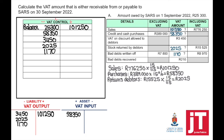Bad debts recovered — they provided the figure, so there's no calculation involved. Bad debts recovered means we've collected money that was previously written off from the debtor's account. Because we've recovered that money, it is now owed to SARS again. So VAT output will be credited, which means the VAT control account will be credited.